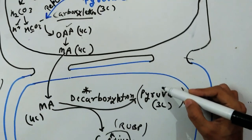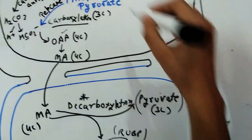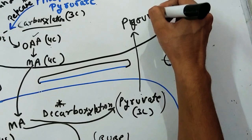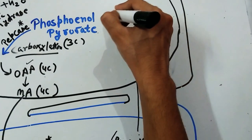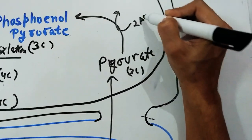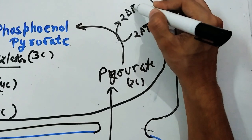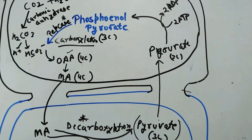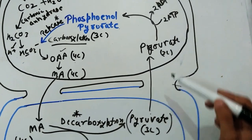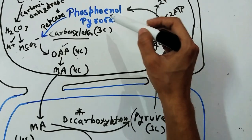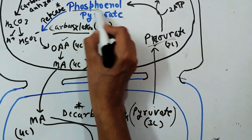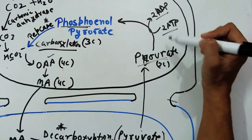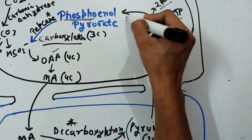To continue the cycle, the pyruvate must be sent back into the mesophyll cell to regenerate phosphoenolpyruvate. Pyruvate diffuses from the bundle sheet cell back into the mesophyll cell. To regenerate PEP from pyruvate, two additional ATP are consumed — two ATP are converted into two ADP, and the inorganic phosphate is added to pyruvate to regenerate phosphoenolpyruvate. This step is known as regeneration.